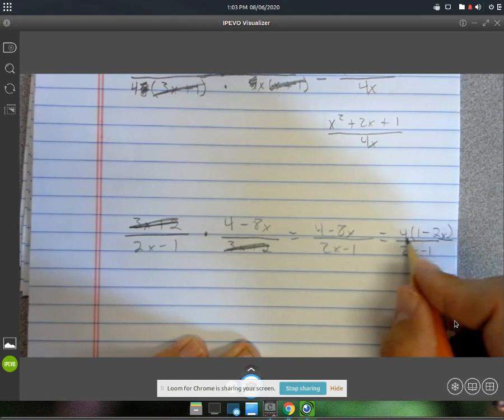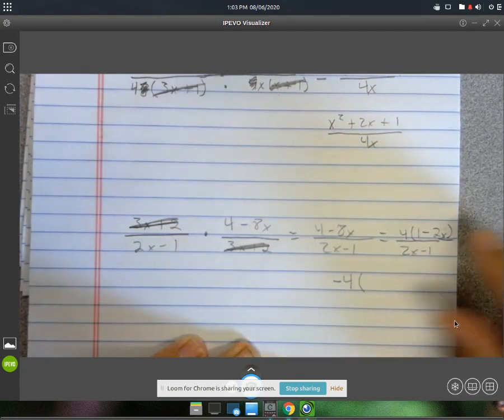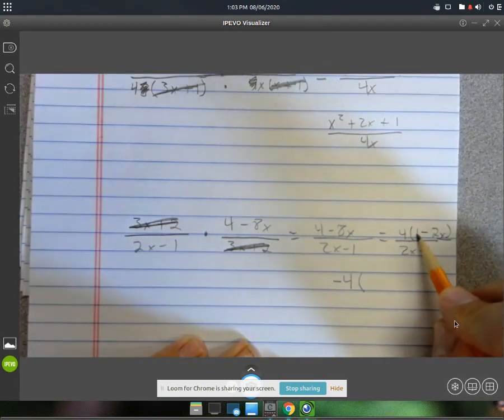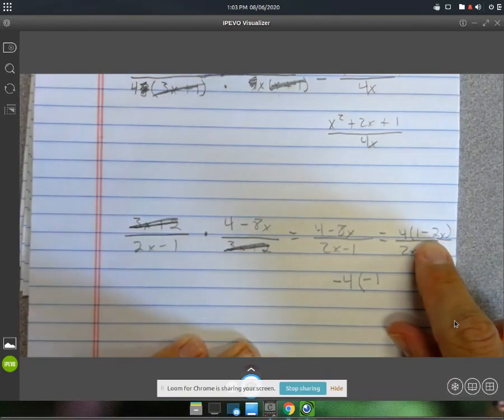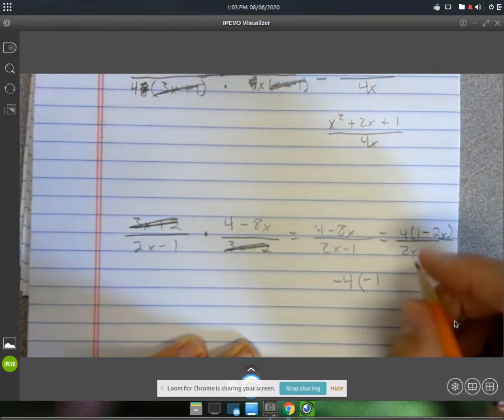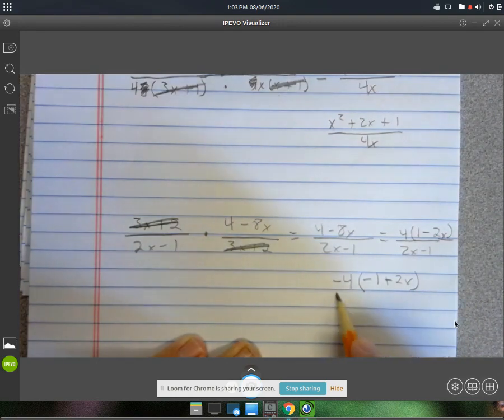So instead of just a 4 out here, we're going to factor out a negative along with it, which is going to make this a negative 1. And instead of this being a minus 2x, it's going to be a plus 2x. Alright. And on the bottom, you still have your 2x minus 1.